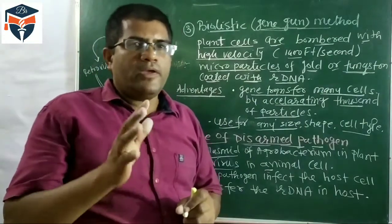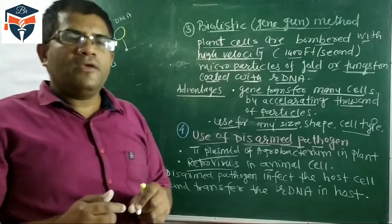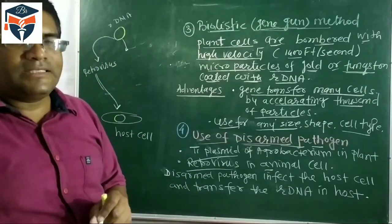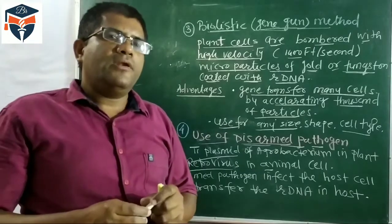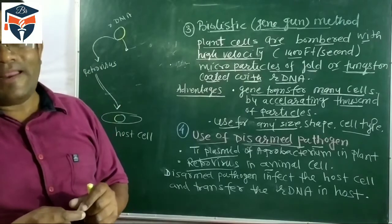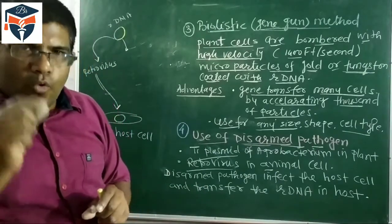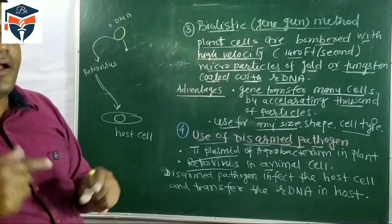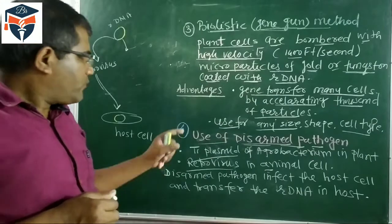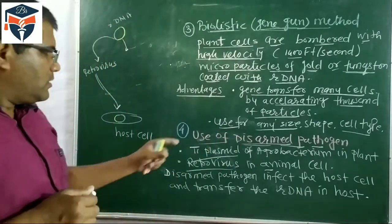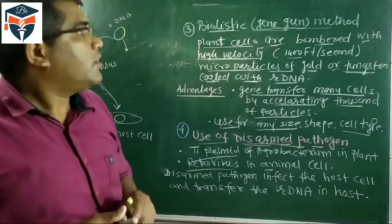Thus we have four methods to make the competent host: one, treatment with calcium chloride which makes pores in the wall of the bacteria; two, microinjection method in which recombinant DNA is directly introduced into the nucleus of the animal cell; three, biolistic method where gold or tungsten particles coated with recombinant DNA are bombarded on the plant cell; and four, use of disarmed pathogens which infect the host cell and help transfer recombinant DNA.